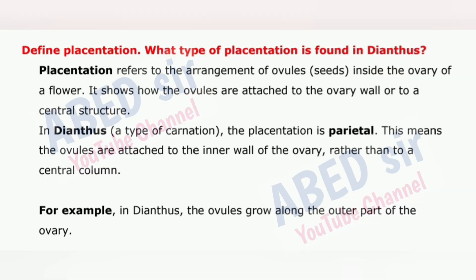Next important question: Define placentation. What type of placentation is found in Dianthus? Placentation refers to the arrangement of ovules inside the ovary of a flower. It shows how the ovules are attached to the ovary wall or to a central structure. In Dianthus, a type of carnation, the placentation is parietal. This means the ovules are attached to the inner wall of the ovary rather than to a central column. In Dianthus, the ovules grow along the outer part of the ovary.